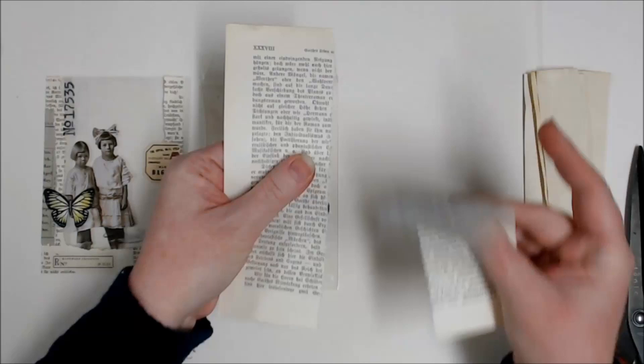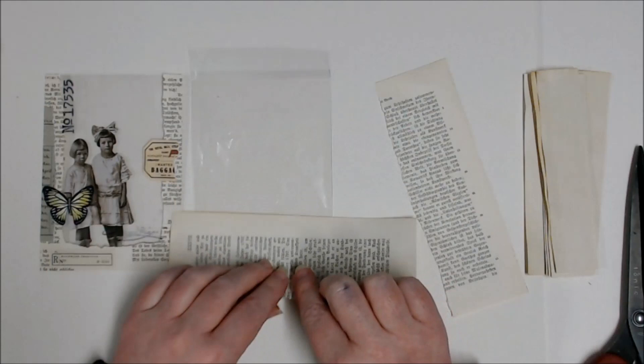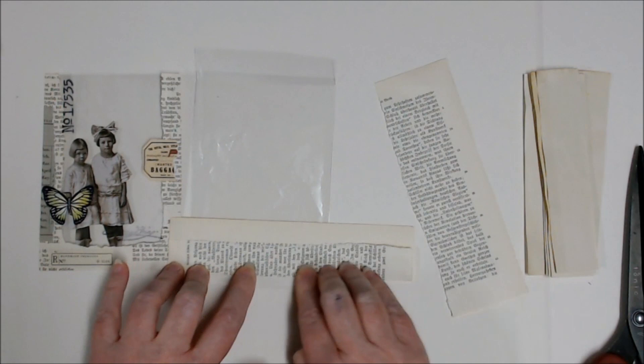So I'm going to take a piece of book page now and I'm just going to tear this one in half and I'm going to fold it in half but I'm going to ignore this where there's no text on here so I'm folding the text part in half.